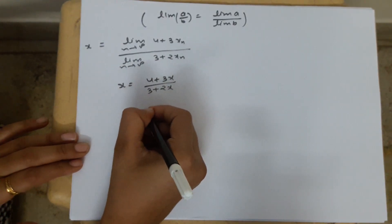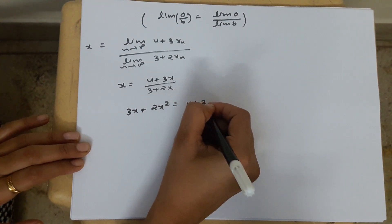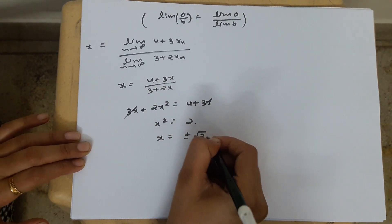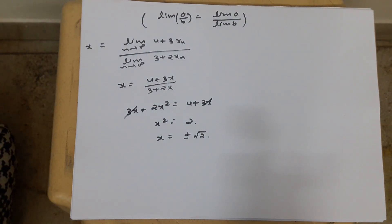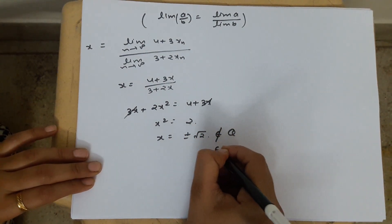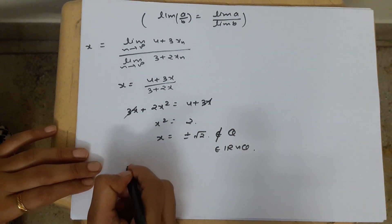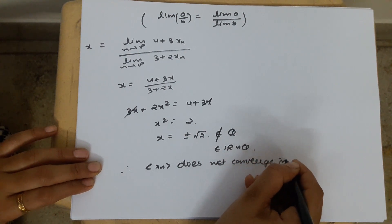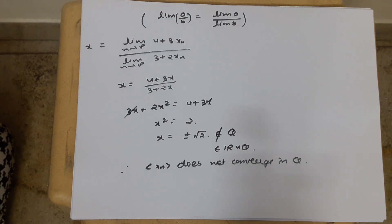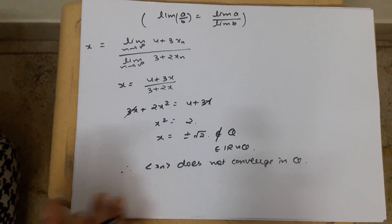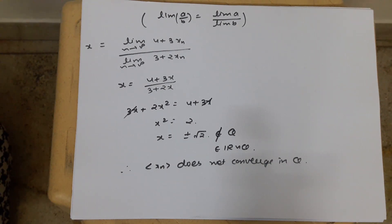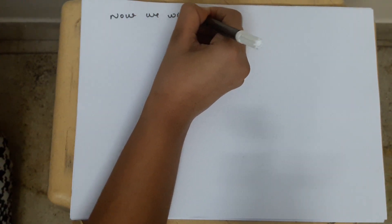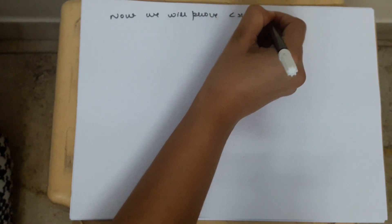Cross multiplying: 3x + 2x² = 4 + 3x. The 3x cancels, giving x² = 2, so x = ±√2. The limit is √2. Since √2 belongs to the set of irrational numbers, the sequence Xn does not converge in Q. In the next case we will prove that this sequence is a Cauchy sequence.